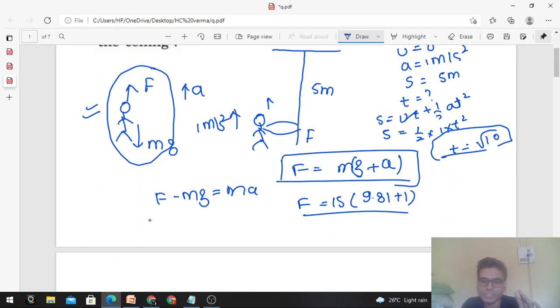If acceleration is 0, if the monkey is at rest or moving with constant velocity, then acceleration is 0. What is the amount of force it is applying on the rope? That is equal to just its weight. So it has to apply a force equal to its weight on the rope to remain stationary or move with constant velocity.